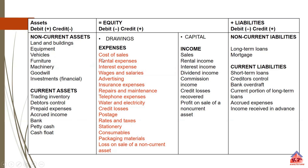We will keep referring to this table whenever we are not sure about what types of accounts are involved. In this case, we are looking for capital. Capital contribution falls under the equity account. We also have to search for wages — wages and salaries — which is also here. Both of these are equity accounts. So to keep the accounting equation balanced, one of these must increase and the other must decrease. We are expecting a plus or minus in terms of whether an element increases or decreases.